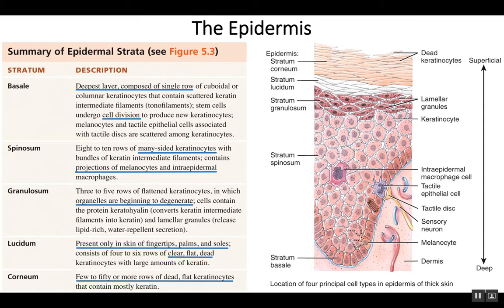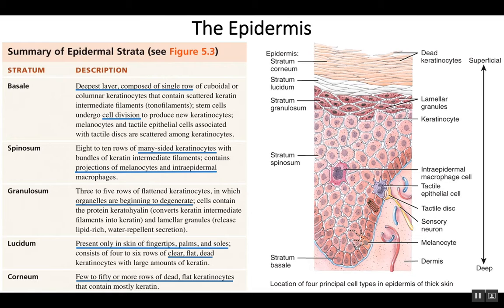You can simplify a lot of this information and just learn each of the layers in their order. This table goes from the deepest layer towards the more superficial layer, so it's kind of opposite the drawing. The table starts with the stratum basale, which is the deepest layer. When going through the table, you're moving up through the different layers of the epidermis from deep towards superficial.